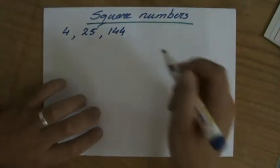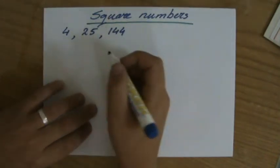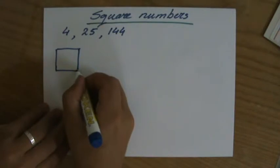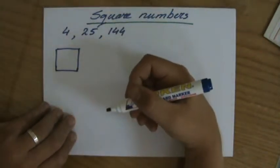When is a number a square number? Well you're going to think in squares. It's in the name. You're going to think in squares. This is a square. All the lengths are the same.